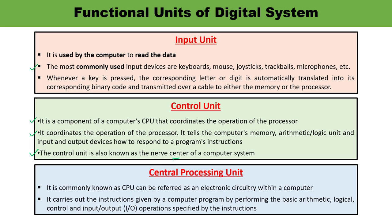The central processing unit, CPU, is commonly known as CPU and is referred to as the electronic circuitry within a computer. The whole sole responsibility lies with the CPU — it carries out instructions given by the programmer and performs operations like arithmetic operations such as addition, subtraction, division, multiplication, logical operations like AND, OR, NOT, and input/output operations. Once information is entered into the computer by an input device, the processor processes it. CPU is known as the brain of the computer and is the overall control center.